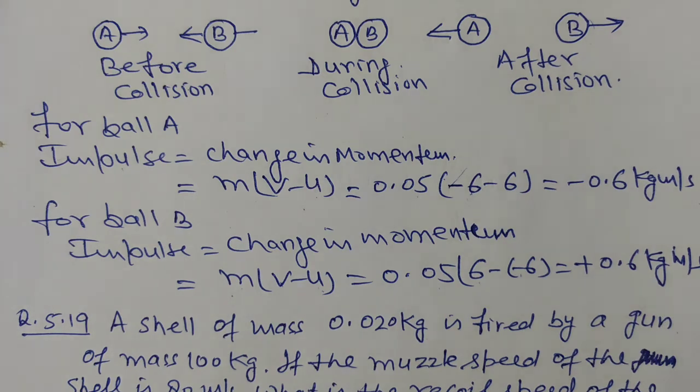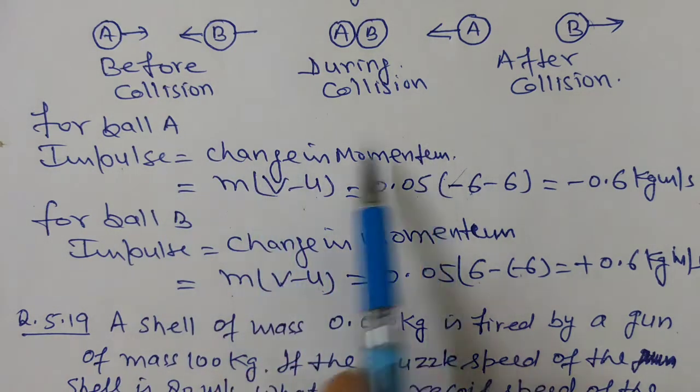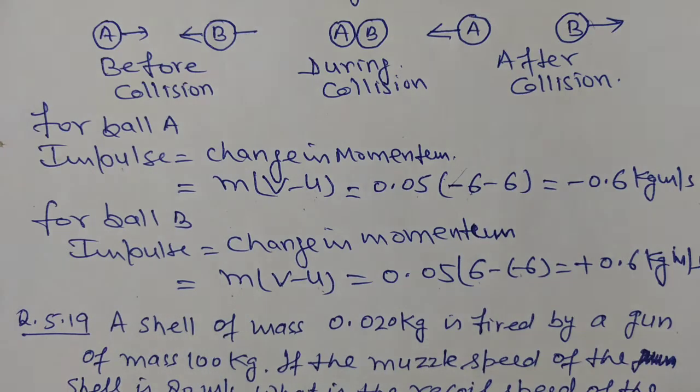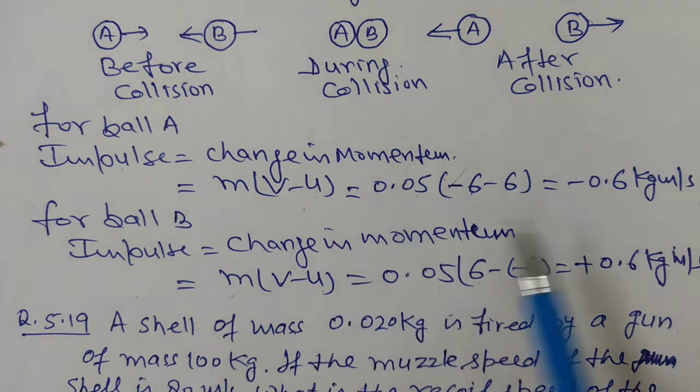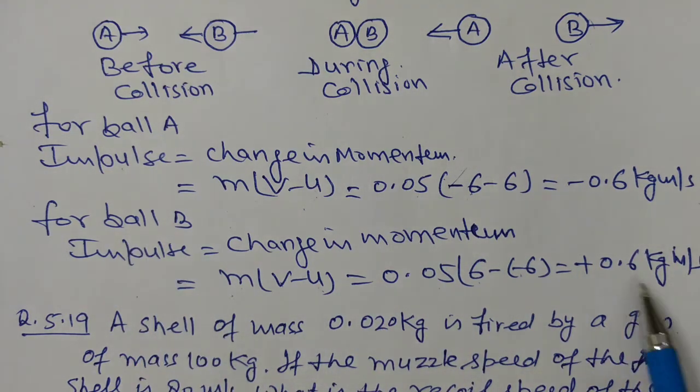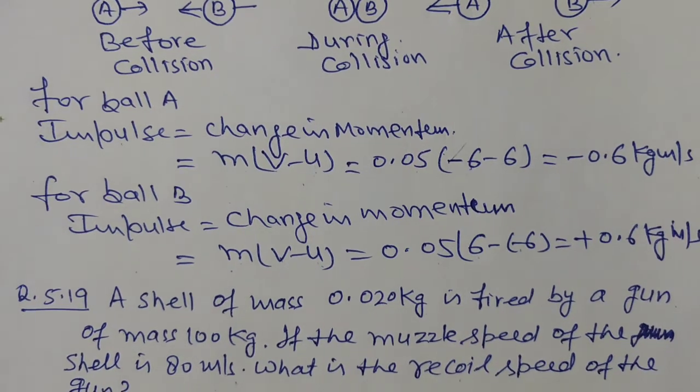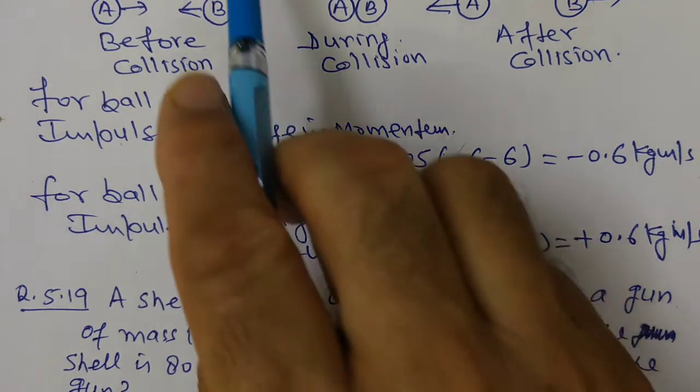We calculate the change in momentum. Ball A's impulse is along negative x-axis, but ball B's impulse is along positive x-axis. This way we can calculate the impulse.